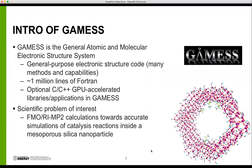I wanted to give a quick high-level introduction to GAMESS so you can understand what type of code we're dealing with. It's a general purpose electronic structure code which has a lot of functionality. It's large, about a million lines of Fortran, and has been around since the 1980s. It has some optional C and C++ libraries with GPU-accelerating code with CUDA.